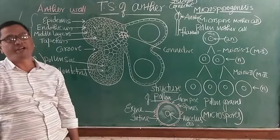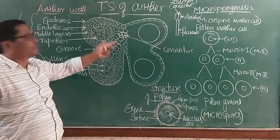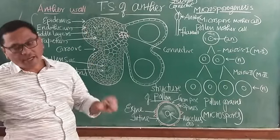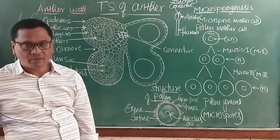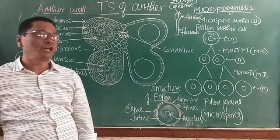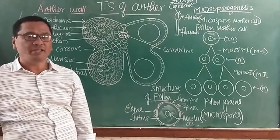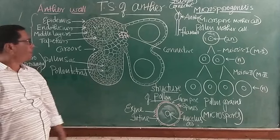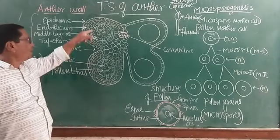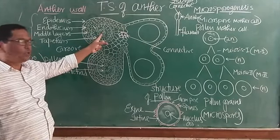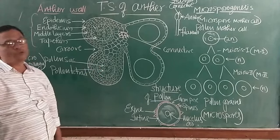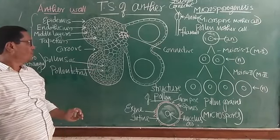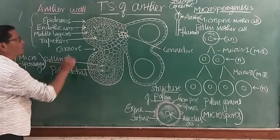The sequence of the different layers of the anther wall, from outer to inner side, is: epidermis first, then the endothecium, then the middle layers, and internally the tapetum. Epidermis is single-layered; endothecium is also single-layered but thickened due to extra deposition of callose. The middle layers are many in number. The innermost tapetum cells are larger and nourish the inner developing sporogenous tissue within the pollen sacs or microsporangia.